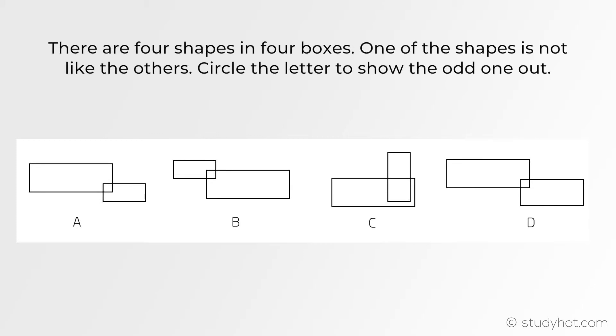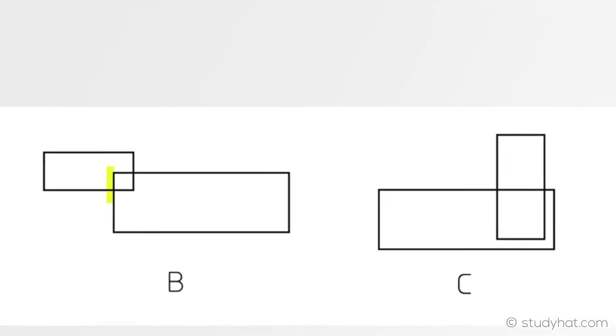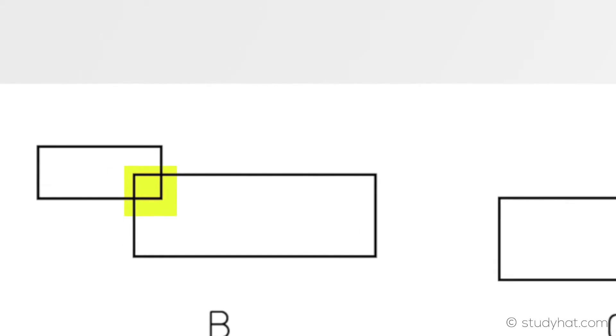The next question says there are four shapes in four boxes. One of the shapes is not like the others. Circle the letter to show the odd one out. Something that I can spot straight away is that each figure has two rectangles, but if we go a bit further in depth you'll see that one of those two rectangles overlaps the other one at one of the edges.